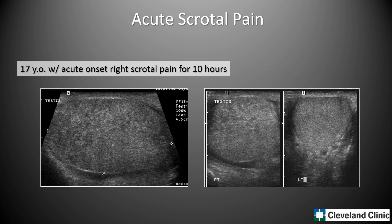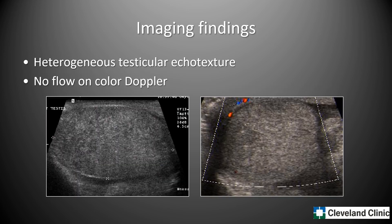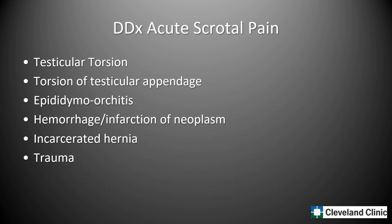The first case is that of a 17-year-old with acute-onset right scrotal pain that has lasted for 10 hours. We see sagittal and transverse images of the right testis with a transverse image of the left testis for comparison. Color Doppler shows no flow within the right testis and normal-appearing flow in the left testis. In summary, we have heterogeneous right testicular echo texture and no flow on color Doppler exam.